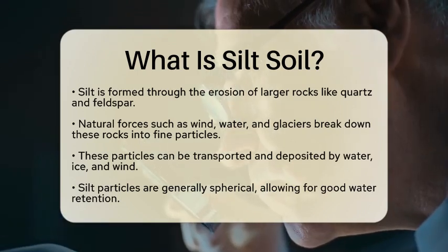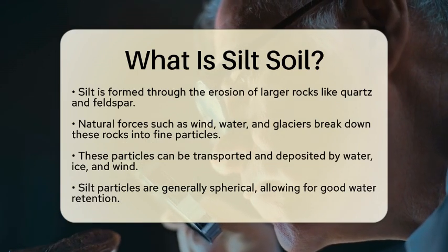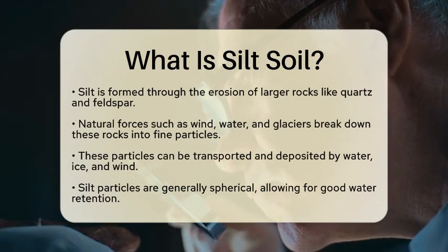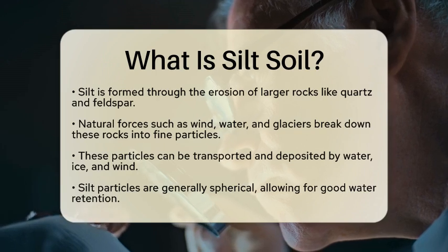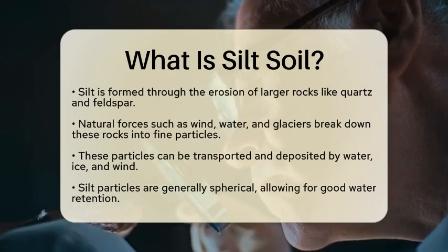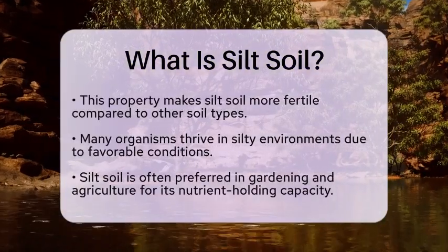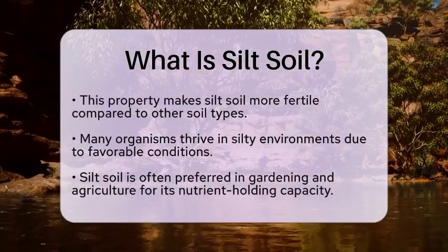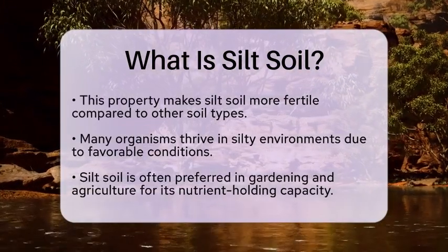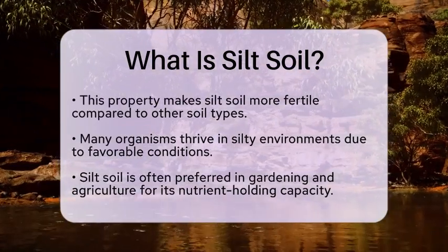One of the key features of silt soil is its structure. Silt particles are generally spherical in shape, which allows them to retain a large amount of water. This property makes silty soil more fertile than other types of soil, as it can hold nutrients and moisture well. Many species of organisms thrive in silty environments due to its favorable conditions. This is why silt soil is often sought after in gardening and agriculture.